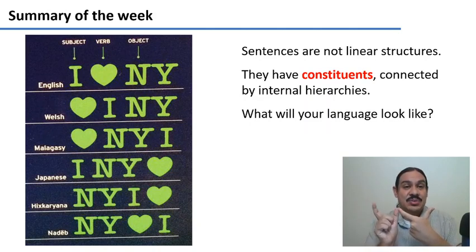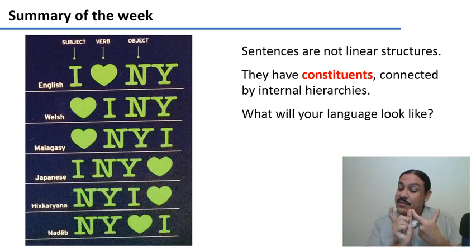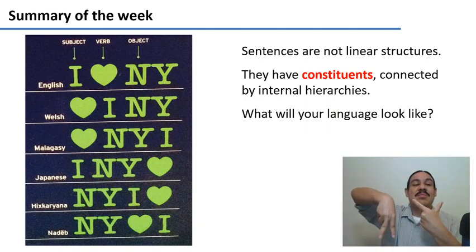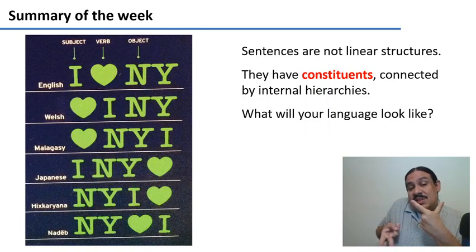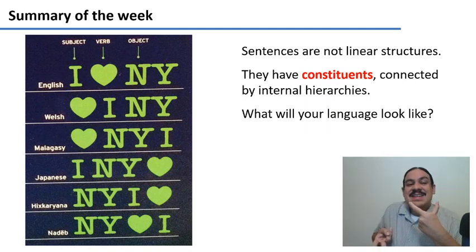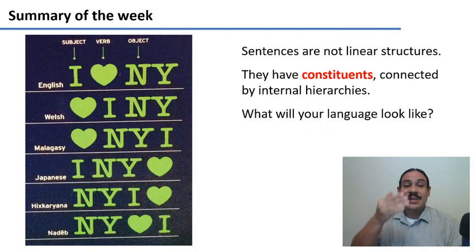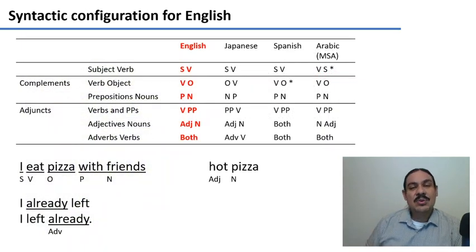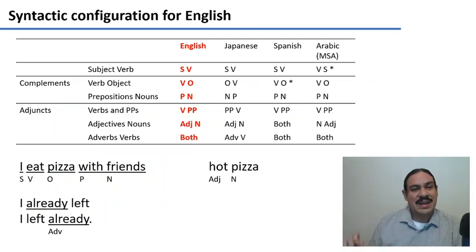Maybe your language is going to look like English, where you have subject, verb, object — as in "I love New York." Or maybe your language is going to look a little bit like Japanese, which has these two flipped, where you have I, New York, love. So your language can look like any of these. Let's look at a few of the settings that you would need to set in one direction or the other to make the order of a language.